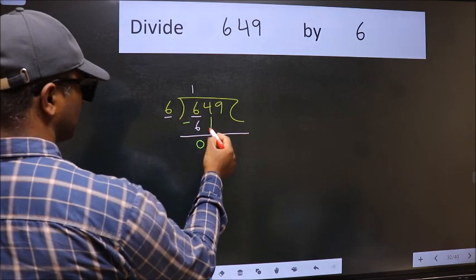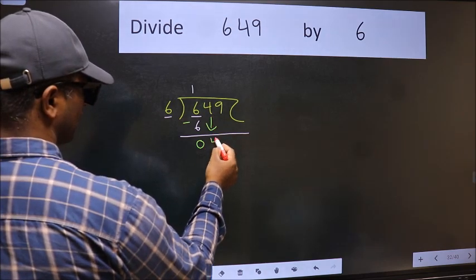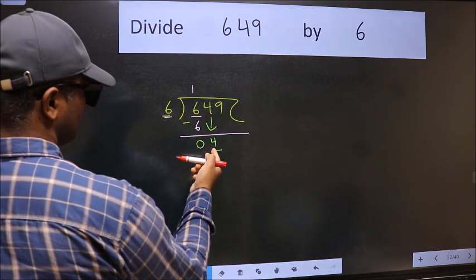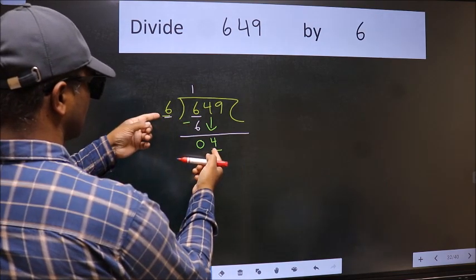After this, bring down the beside number: 4 down. Now here we have 4 and 6 here. 4 is smaller than 6.